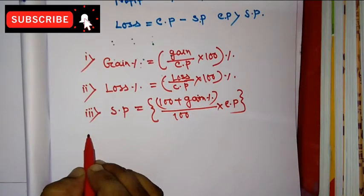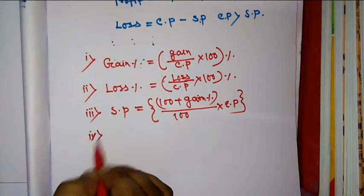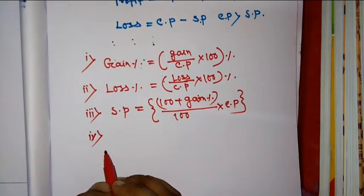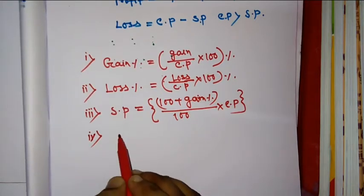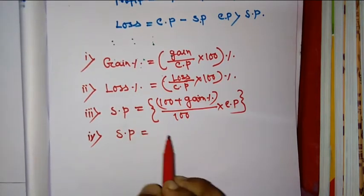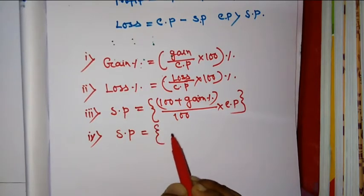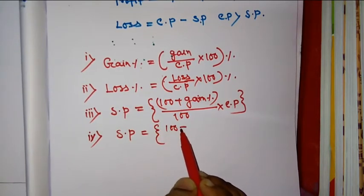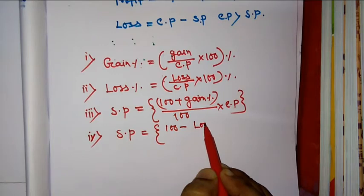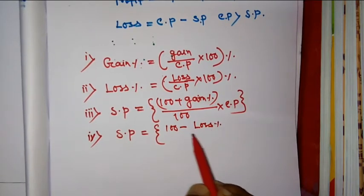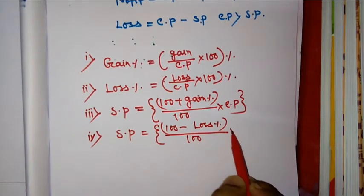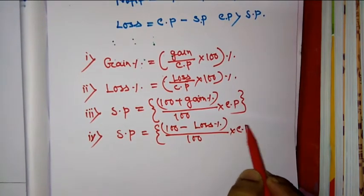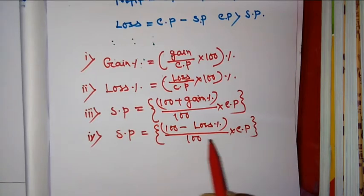Number four: SP in the case of loss. SP is equal to open bracket 100 minus loss percentage, close bracket, divided by 100 into CP.